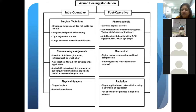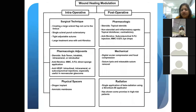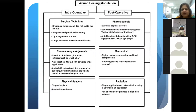Intraoperatively, a meticulous surgical technique is essential. Use non-tooth forceps to prevent micro-perforations. One needs to create a large scleral flap and not cut all the way to the limbus — stop 0.5 to 1 millimeter short. This facilitates a posterior flow of the aqueous rather than an anterior bleb. A single scleral punch sclerostomy is recommended.